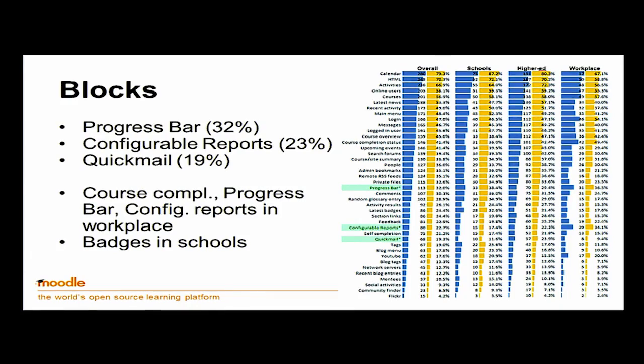Between sectors, course completion block, the progress bar, and Configurable Reports are used in the workplace, which reflects the sort of teaching that goes on there. Badges were more used in schools than in other sectors. Maybe that's because we're not hearing enough from people who are using it in schools, but it is being used.